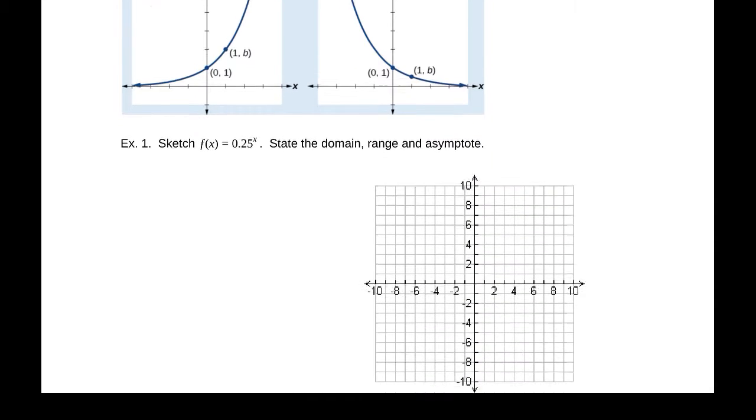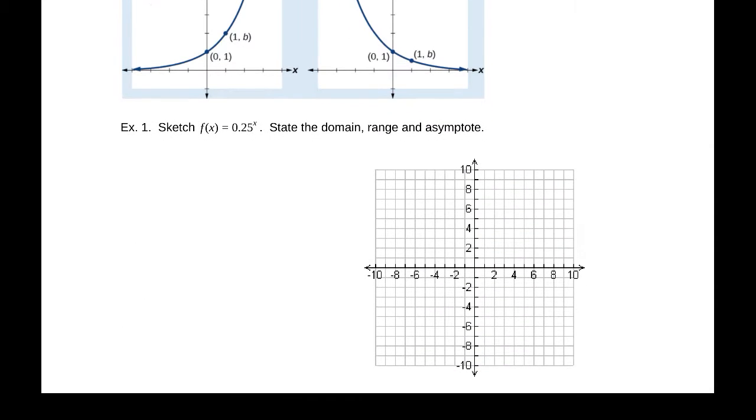So let's sketch this function f(x) = 0.25^x. The domain, range, and asymptotes are needed here. Our domain is negative infinity to infinity, and very little will actually change that. And our range, because this is just of the form a times b to the x, it will be zero to infinity.